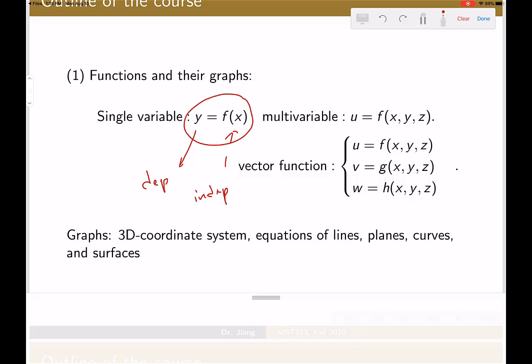And we can have multiple independent variables. So if we write this way, then x, y, z, they are all independent variables. And u over here is dependent variable. And we can also have multiple dependent variables. In this so-called vector function, we have three dependent variables and three independent variables.